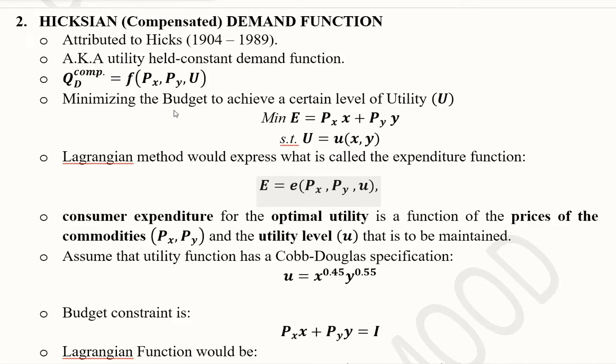We want to minimize the budget to achieve a certain level of utility. So we want to minimize the cost and we have a certain level of utility that we want to achieve. Here you can see the things are inverted. The constraint is now the budget function, whereas it was a constraint.